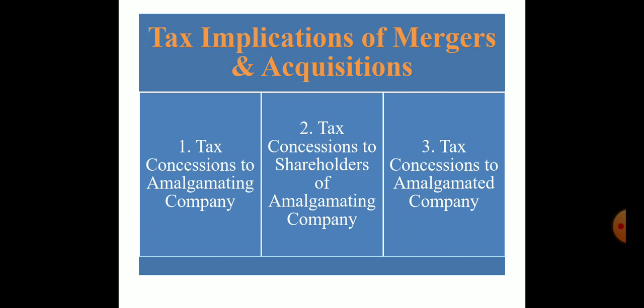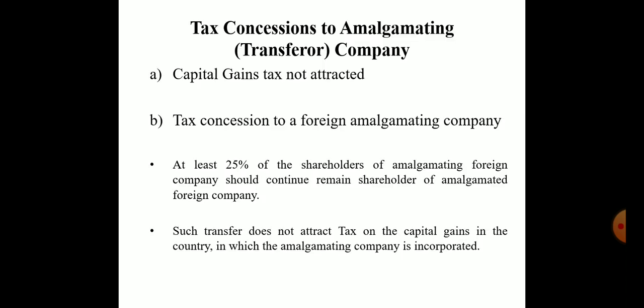There are basically three types of tax benefits. First is tax concession to the amalgamating company. Second is tax concession to the shareholders of the amalgamating company. Third is tax concession to the amalgamated company.